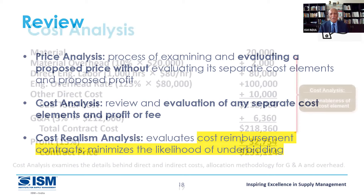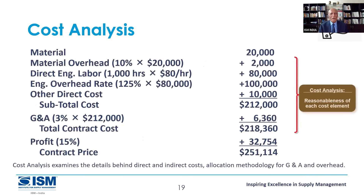A simple example of a realistic cost: material cost $20,000, material overheads 10% ($2,000), direct engineering labor 1,000 hours at $80 per hour, engineering overheads, other direct costs, then general and administration costs at 10% of total cost. We come with a profit margin of 15%, giving a broad total — mostly in Western countries the cost would be around $250,000.